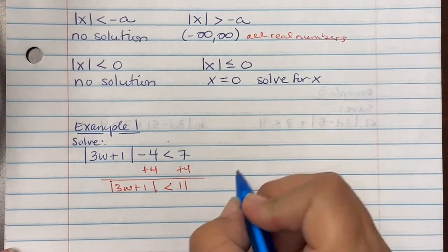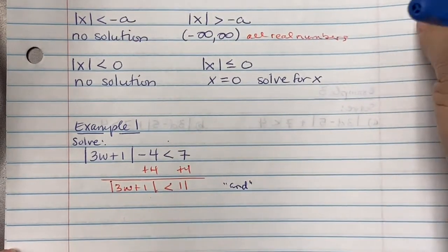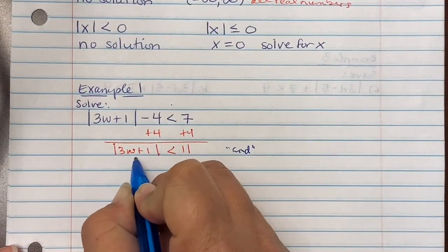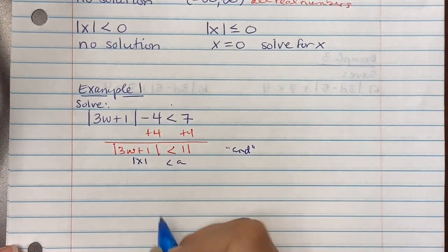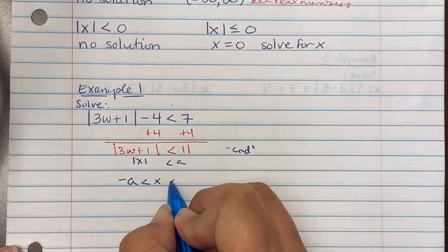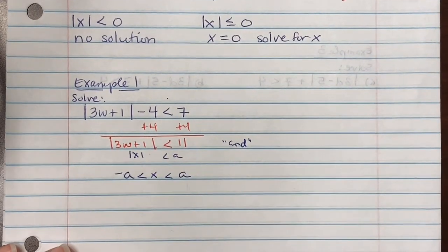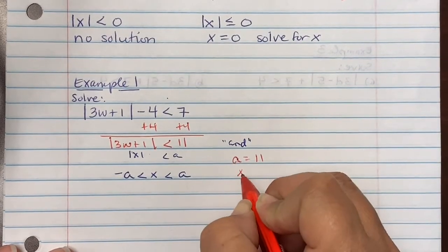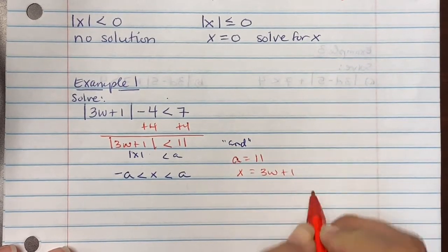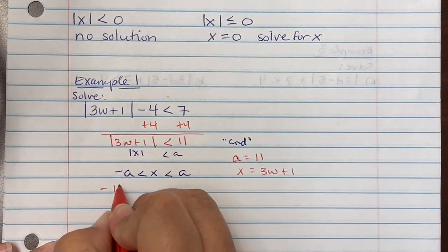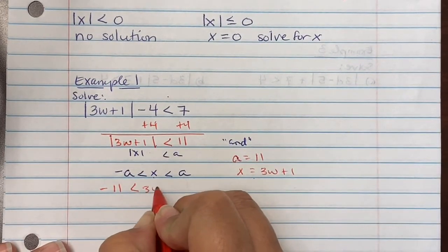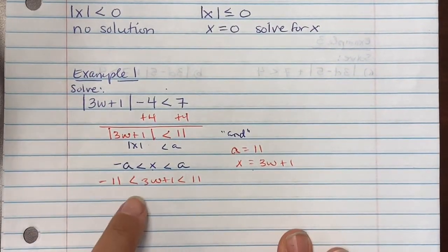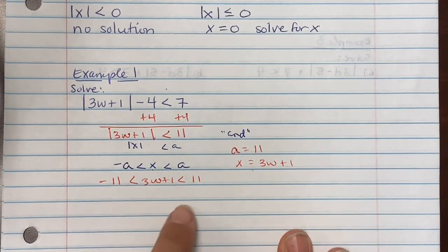Since absolute value is less than a positive value, this is an 'and' intersection. We rewrite it in compound inequality format: negative a less than x less than a. Here a is 11 and x is represented by 3w plus 1, so we write negative 11 less than 3w plus 1 less than 11.